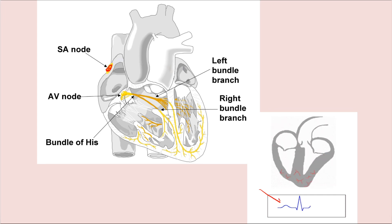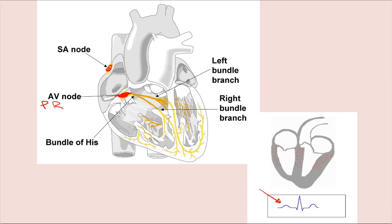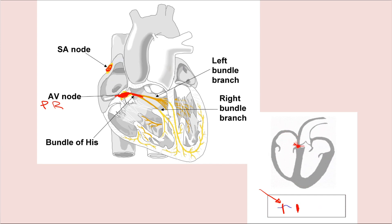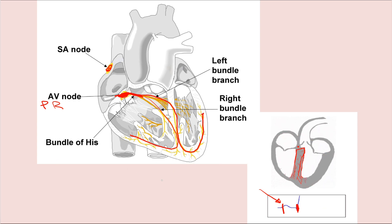Atrial contraction is represented by the P wave. Then the electricity goes to the AV node, where there will be some delay represented by the PR interval — from the start of the P to the R. Then from the AV node it goes to the bundle of His, then to the right and left bundle branches, causing ventricular contraction represented by the QRS complex.